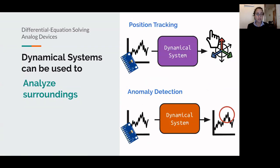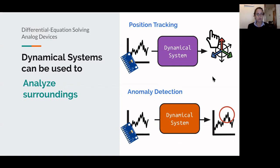Something else you can do with dynamical systems is couple them with sensors to analyze your surroundings. You can try to extract higher-order information from sensor data — for example, observing sensor information and extracting the position of somebody's hand from it. You can also do anomaly detection, observing a signal over time and identifying when there is anomalous behavior in that signal.